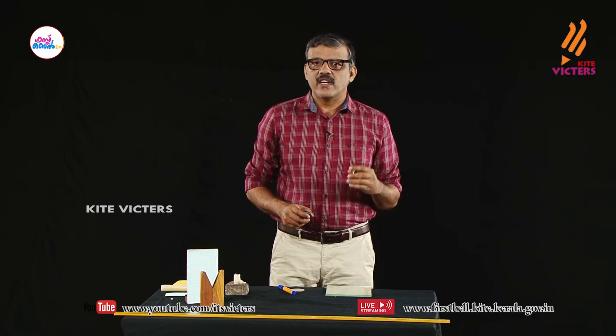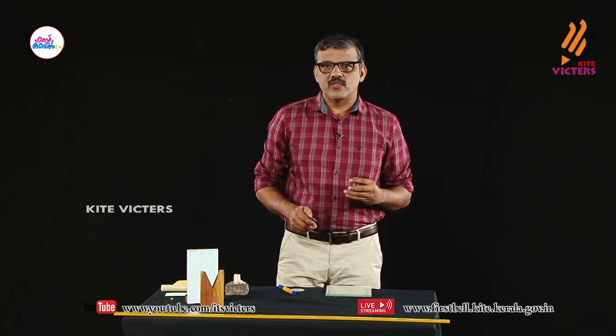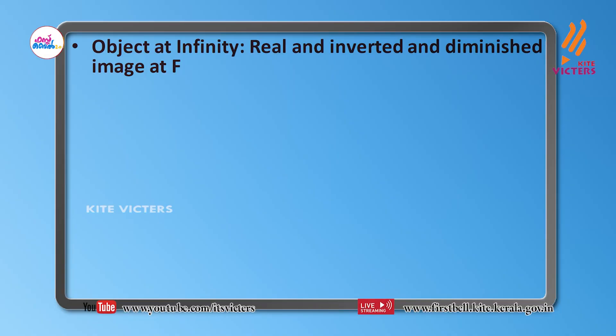The positions and features of images formed by concave mirrors were covered in your eighth standard. When the object is at infinity, we get a real, inverted, and diminished image at F.